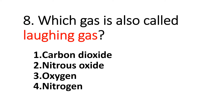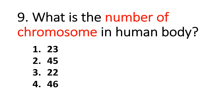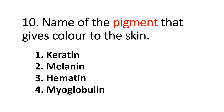Question number seven: Name the disease caused by deficiency of iodine. Answer: goiter. Question number eight: Which gas is also called laughing gas? Answer: nitrous oxide. Question number nine: What is the number of chromosomes in human body? Answer: 46.